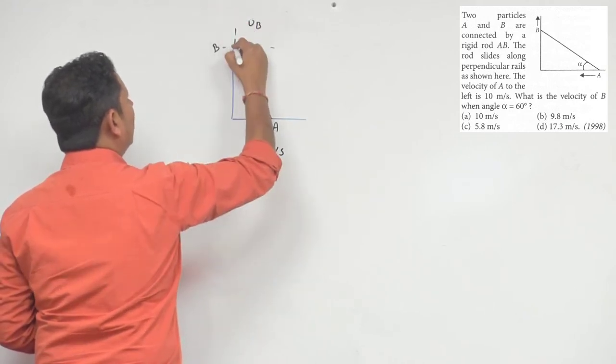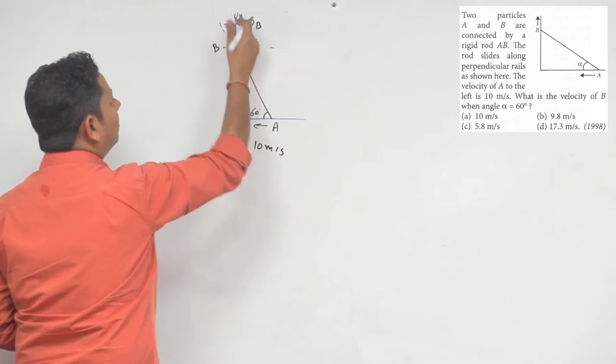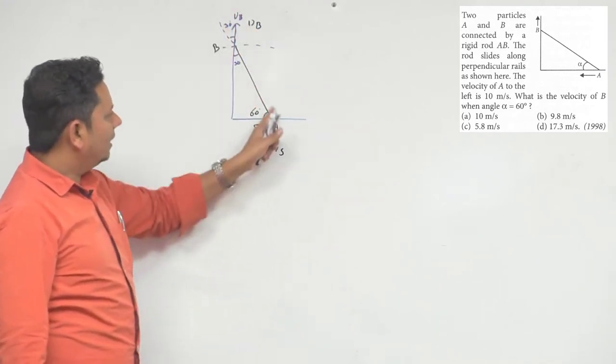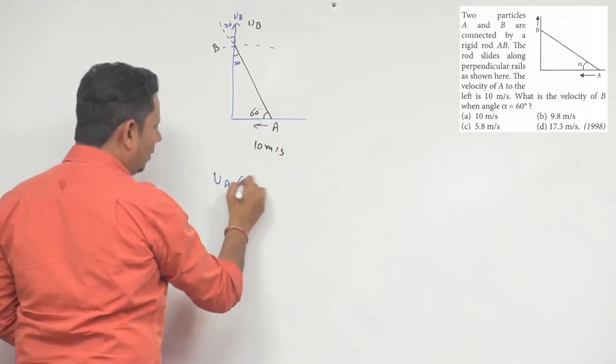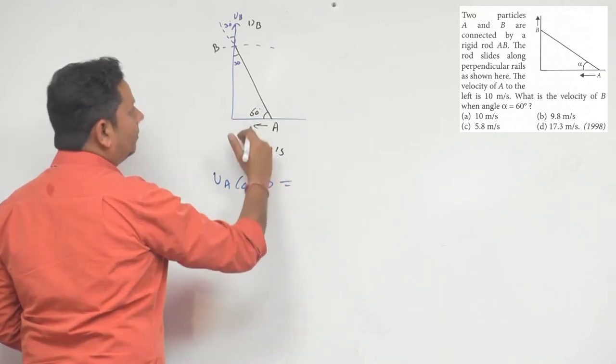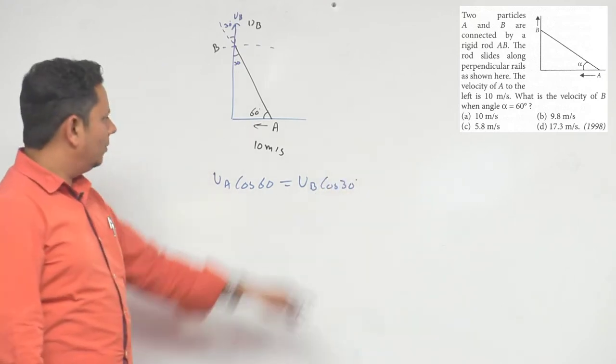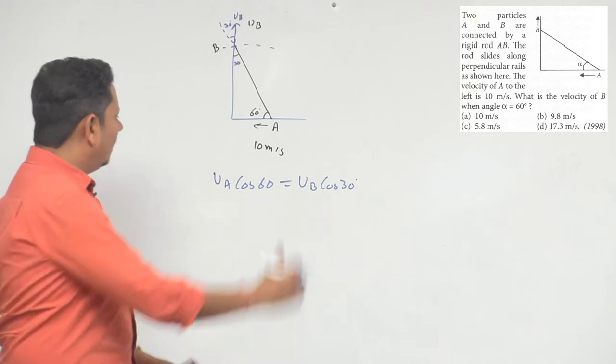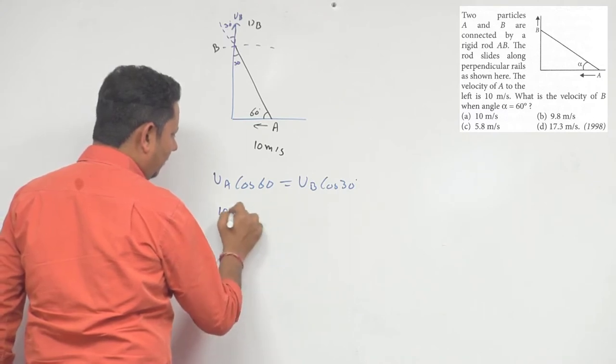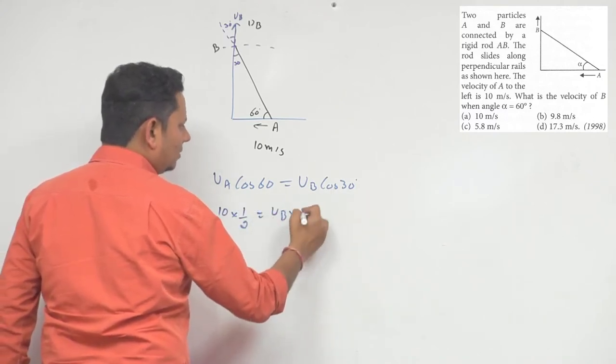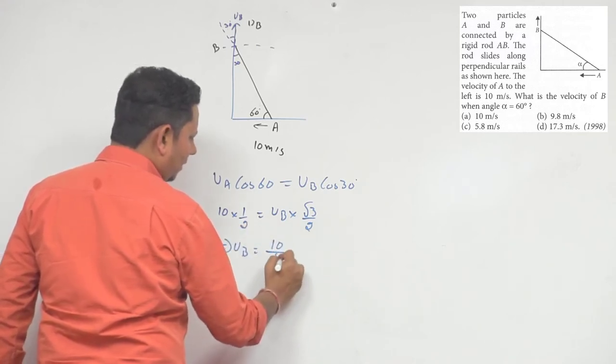So which means, if I extend this direction, the velocity VB, the direction of VB, is the component of VB. So this is the component of VB.